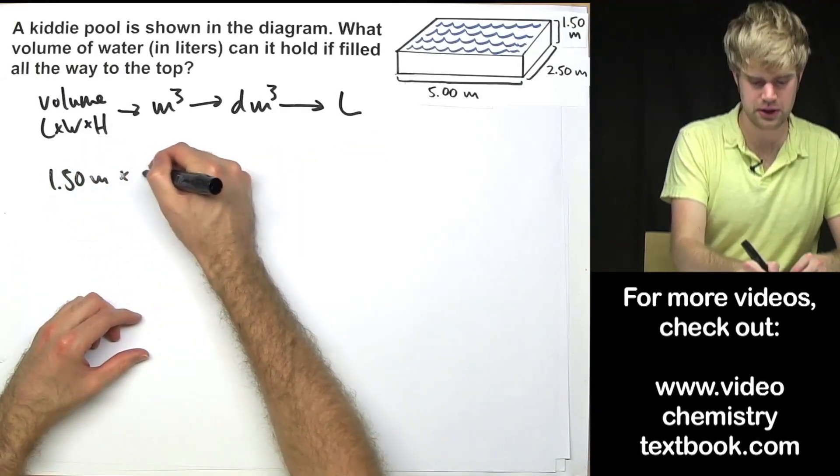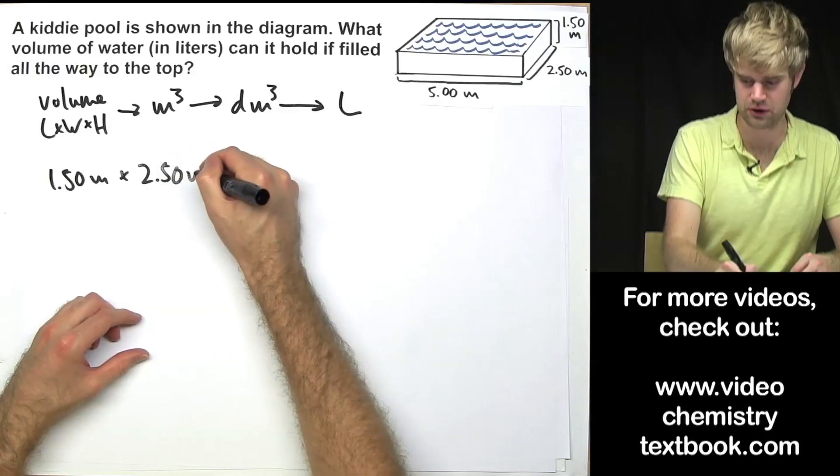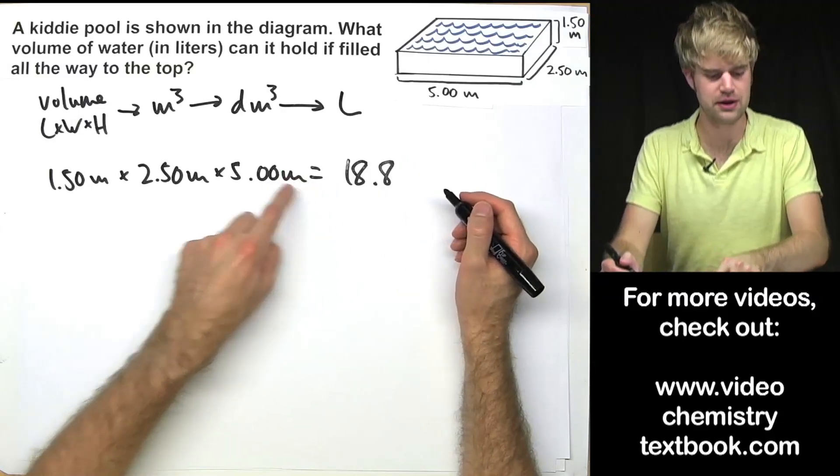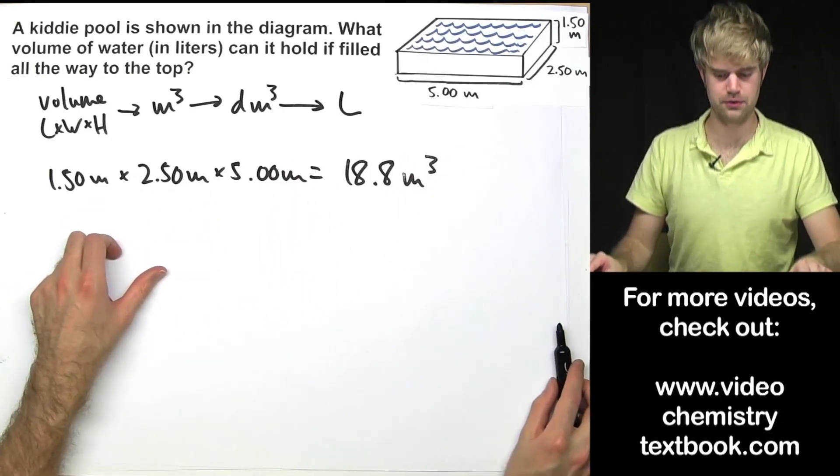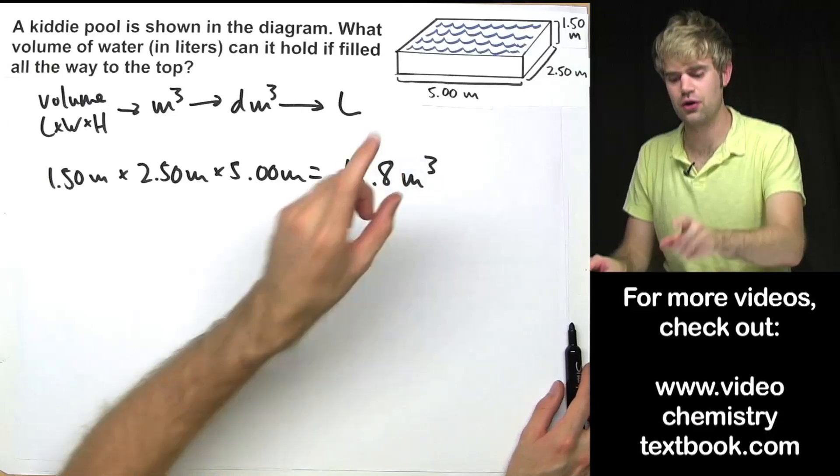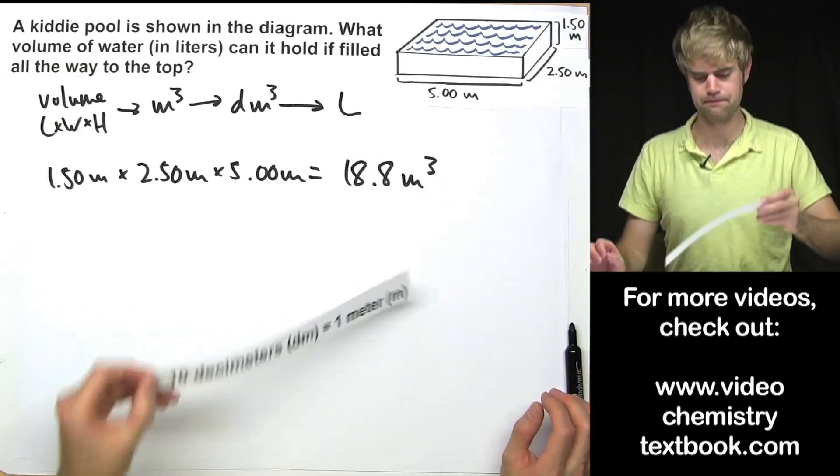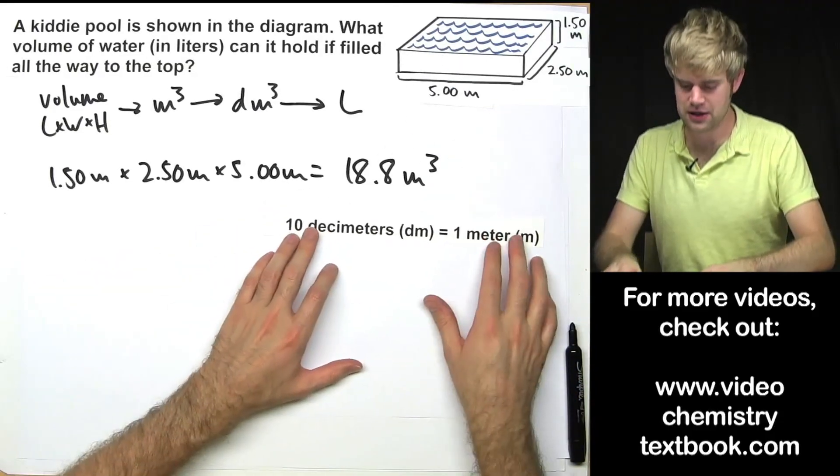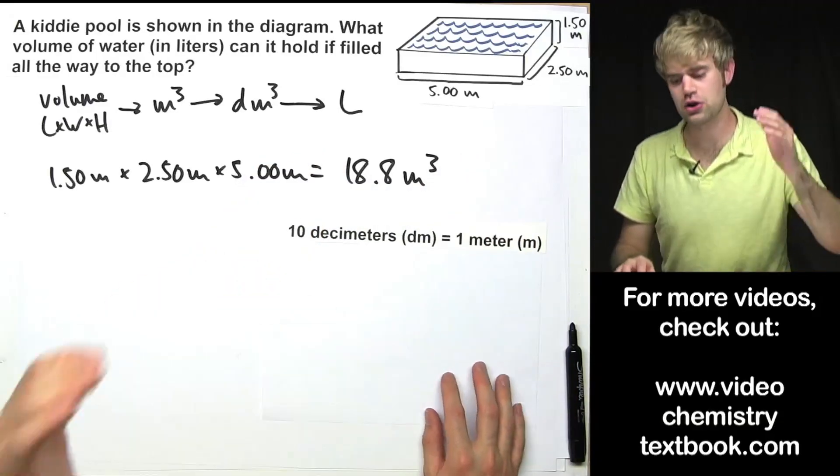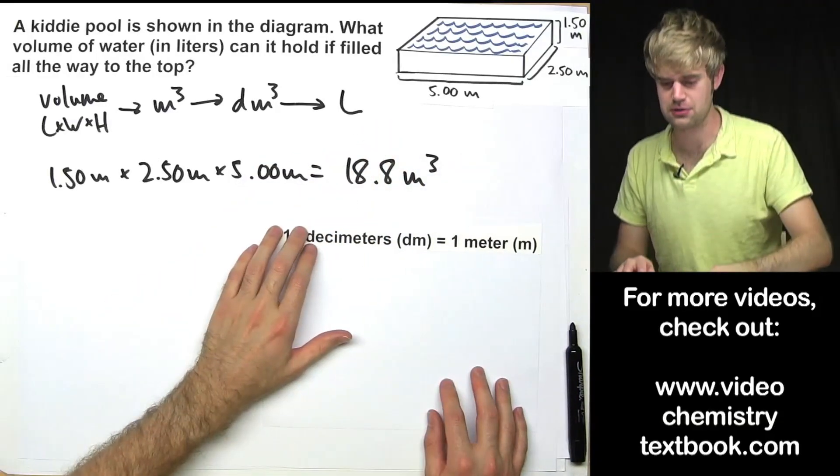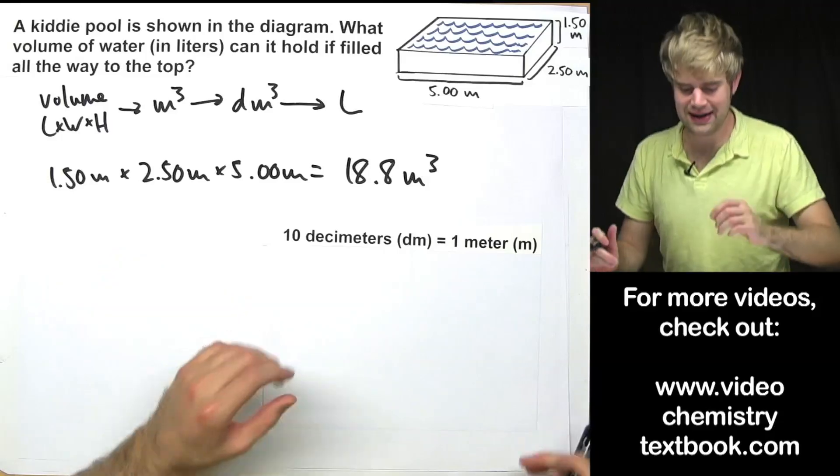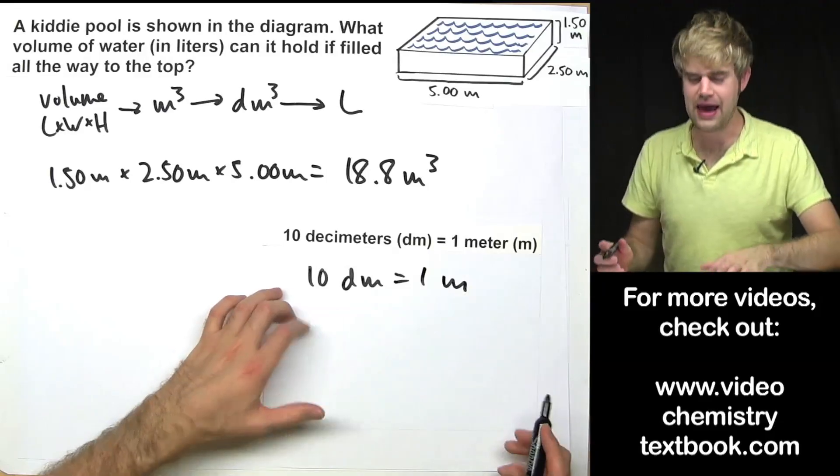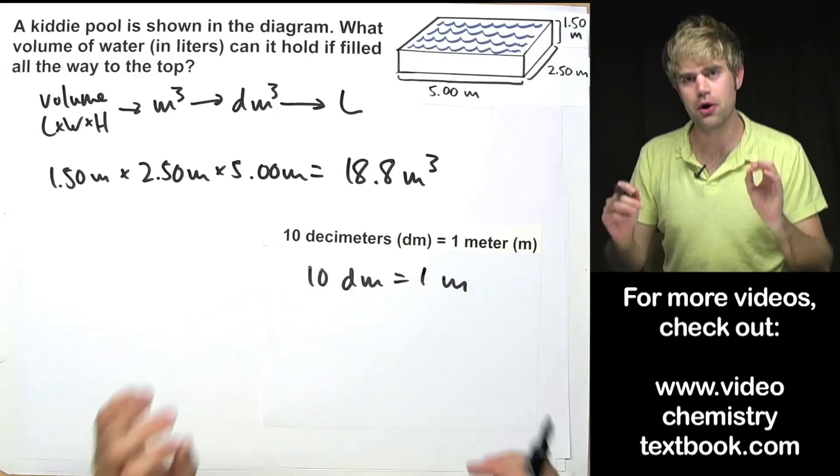1.50 meters times 2.50 meters times 5.00 meters is going to give me 18.8 meters cubed. Now I need to convert from meters cubed to decimeters cubed. I have this relationship here between decimeters and meters, but they're not going to do it because I'm not talking about decimeters and meters, I'm talking about cubic meters and cubic decimeters. So how can I do this? What I need to do is I need to take this relationship, 10 decimeters equals 1 meter and I need to cube both sides of it.